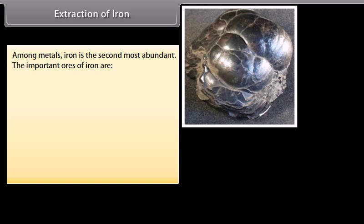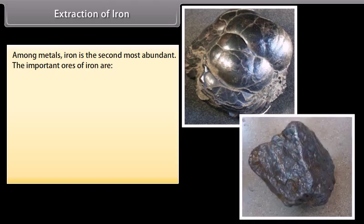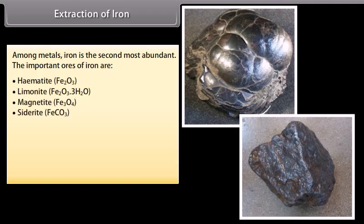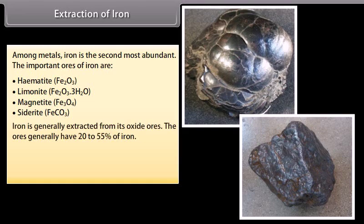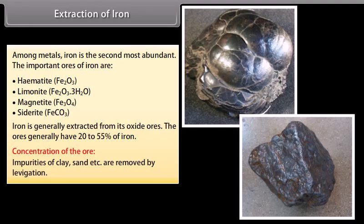Extraction of Iron. Among metals, iron is the second most abundant. The important ores of iron are hematite or red iron ore, limonite or brown ore of iron, magnetite, and siderite. Iron is generally extracted from its oxide ores. The ores generally have 20-55% of iron. Concentration of the ore: Impurities of clay, sand, etc. are removed by lavigation.